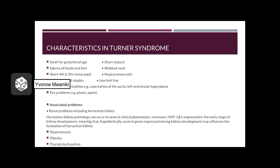Here are some characteristics normally seen in Turner Syndrome. The most common ones are small for gestational age, short stature, webbed neck, and low hairline. They usually are late in achieving puberty. They also have cardiac abnormalities such as coarctation of the aorta and left ventricular hyperplasia, as well as associated renal problems including horseshoe kidney, which can occur in several clinical phenotypes.